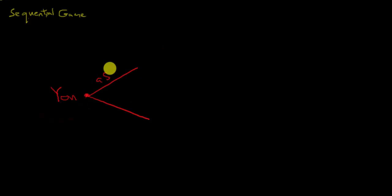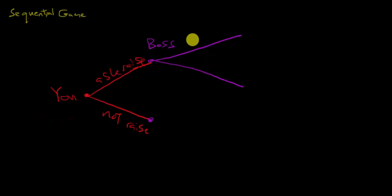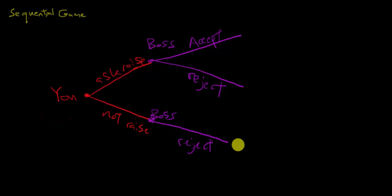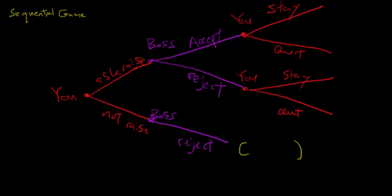A sequential move game is when one player chooses their actions before others can choose theirs. This models salary negotiation well: you can choose to ask for a raise or not, and your boss can then choose to accept or reject. If you never ask, your boss never gives a raise and the game ends. But if you ask and your boss responds, you in turn could either stay or quit — these branches represent different states of the world.